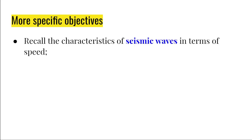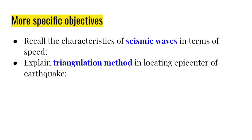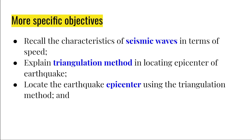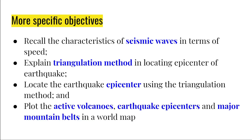Here are our more specific objectives. First, to recall the characteristics of seismic waves in terms of speed. Second, explain the triangulation method in locating the epicenter of an earthquake. Third, locate the earthquake epicenter using the triangulation method. And finally, plot the active volcanoes, earthquake epicenters, and major mountain belts in a world map.